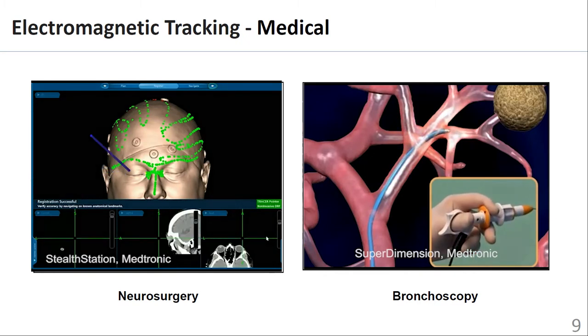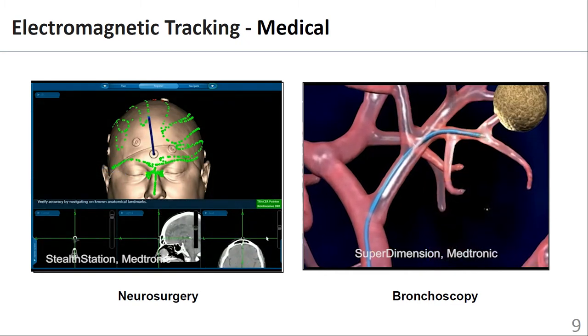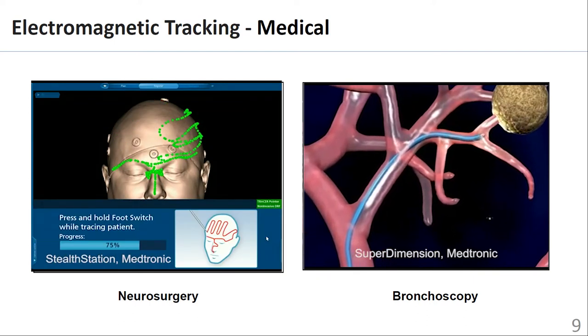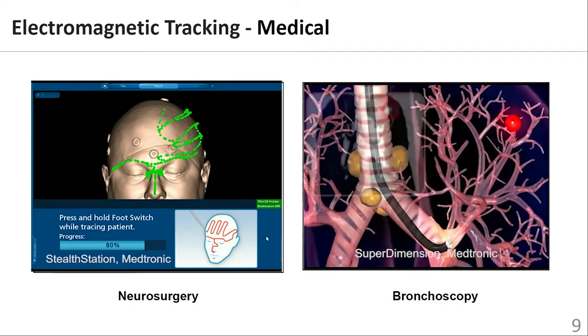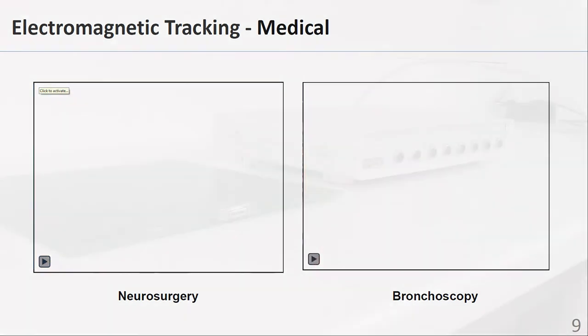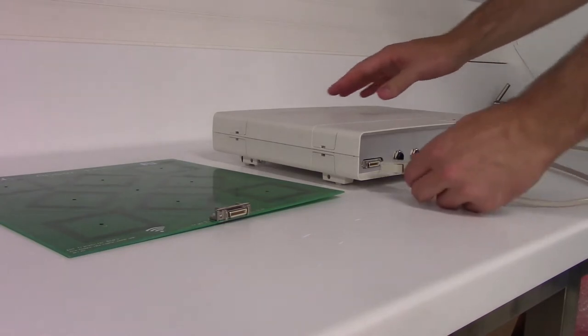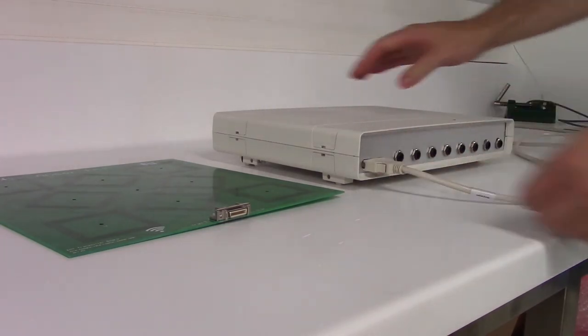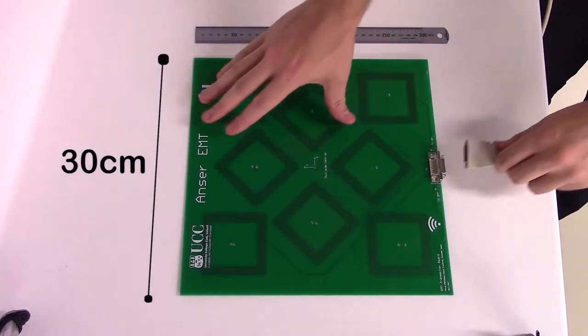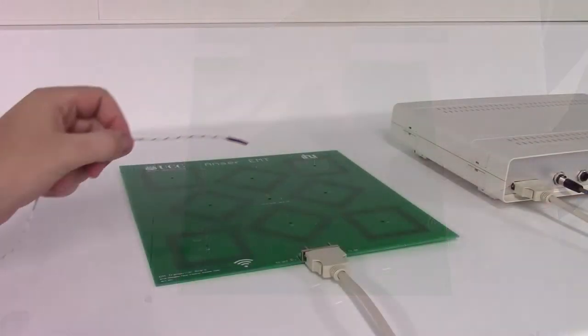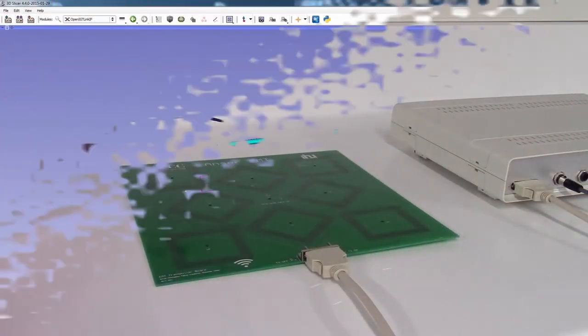The ability to customize magnetic field generators depending on patient size and application may be useful for future medical systems. The work in this paper utilizes an open source electromagnetic tracking system called ANSWER EMT. The system utilizes the magnetic induction approach to sensing and is capable of tracking commercially available off-the-shelf sensors.